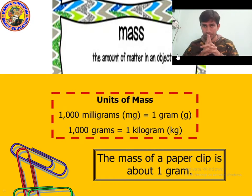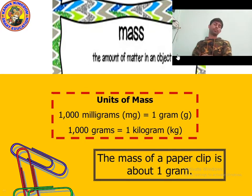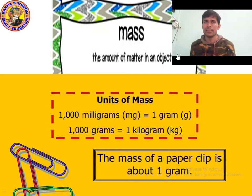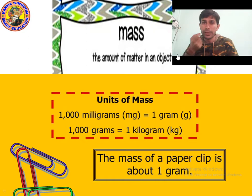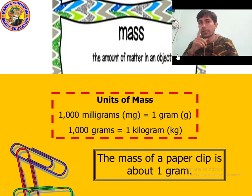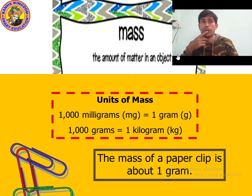We also studied about mass. Mass means the amount of matter in an object. The basic unit of mass is kilogram. One kilogram is equal to one thousand grams, and one gram is equal to one thousand milligrams.